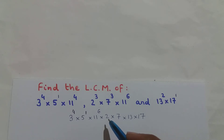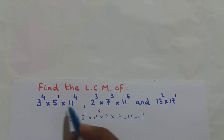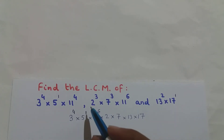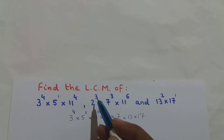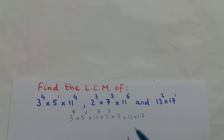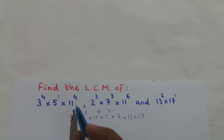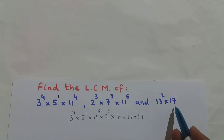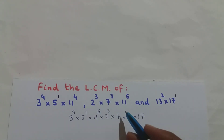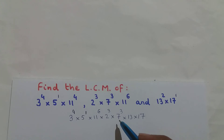What is the exponent of base 2? Base 2 doesn't occur in the first or third expressions. In the second expression I have 2 raised to the power of 3, so the exponent of base 2 is 3. What is the exponent of base 7? Base 7 doesn't occur in the first or third expressions. In the second expression I have 7 raised to the power of 3, so the exponent of base 7 is 3.